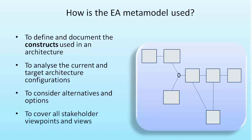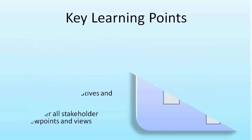We also use the meta model to cover all stakeholder viewpoints and views. This is very important — we already know that we have multiple stakeholders and they all have different views and viewpoints. The meta model is an essential tool for making sure we can represent their needs from their particular viewpoint. The meta model needs to be multidimensional; it needs to be able to look at the architecture from many different perspectives.